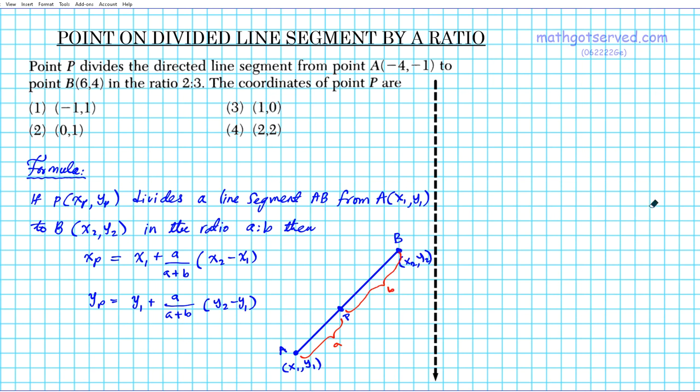So basically the coordinates of point P is X sub P and Y sub P. So if you want to figure out what the X coordinate of this point P is, you're going to use this formula right here, the X sub P part. And then you want to find the Y coordinate, you use this piece right here. And then you put them together, you get what your final answer is.